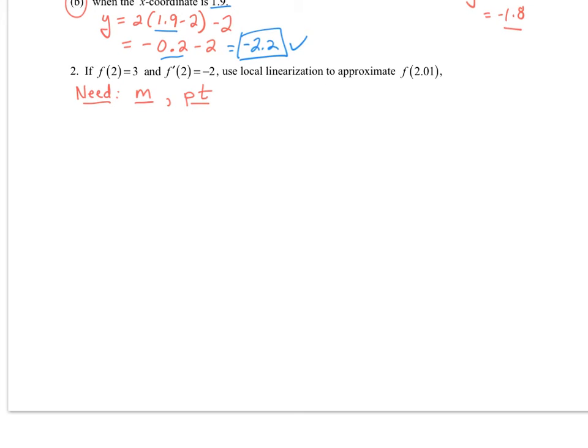In this example, what is my slope? Well, my slope is going to be the derivative at that point, so that would be -2. What's my point? My point is (2, 3) that I get from right here. So now I can very easily write my equation of my tangent line. So y - 3 = -2(x - 2). I do my approximation for 2.01 by plugging it in.